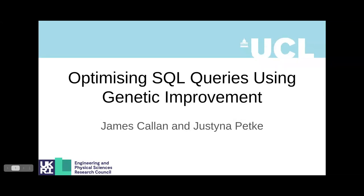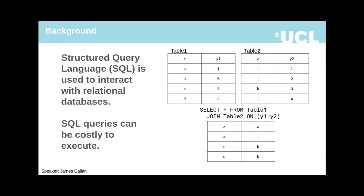This is James Callan from UCL presenting my and Justina Pecker's paper on optimizing SQL using GI. SQL is the language we use to interact with relational databases. We chose to apply GI to read-only queries — select queries in SQL — which avoids any risk to the database being accessed.